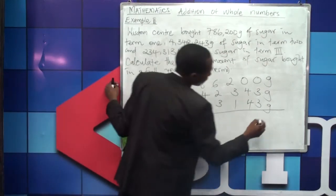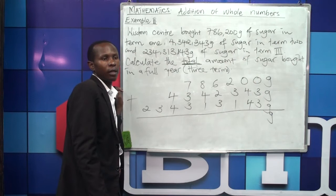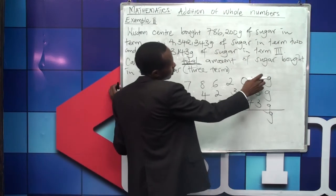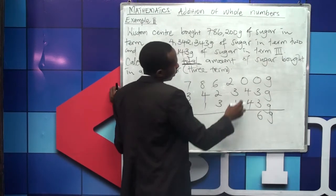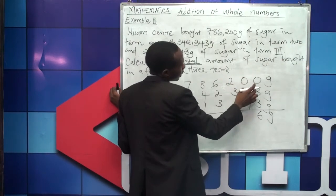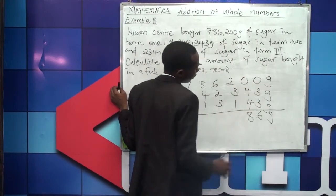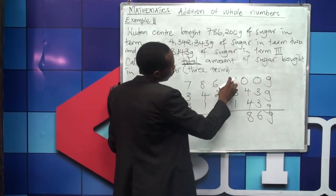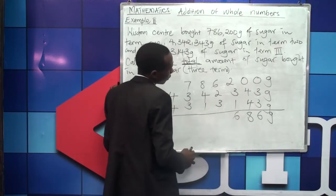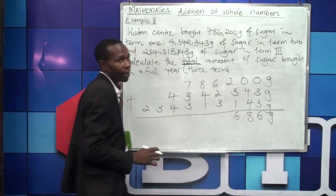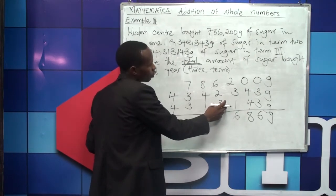Starting from ones: 0 plus 3 plus 3 gives 6. Then 0 plus 4 plus 4 gives 8. Then 2 plus 3 is 5, plus 1 is 6. Then 6 plus 2 is 8. Then continuing to the next column: 6 plus 2 is 8, plus 3 gives 11. Remember we cannot write two digits at one place value.